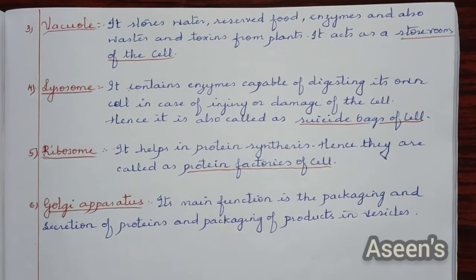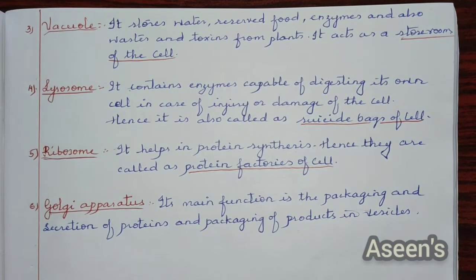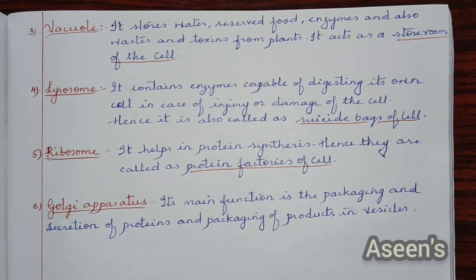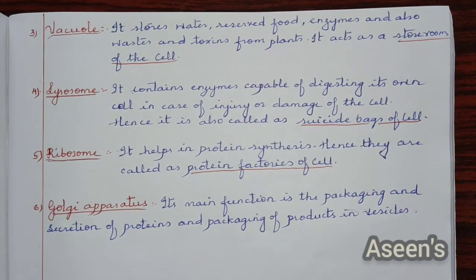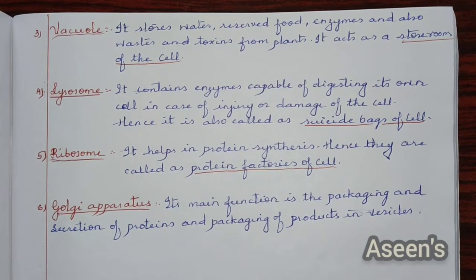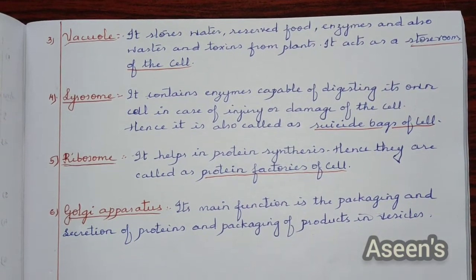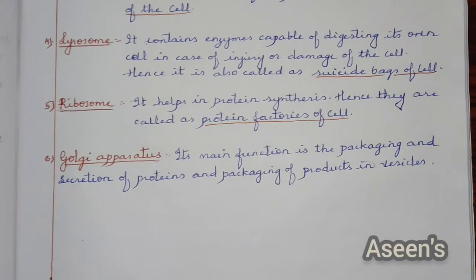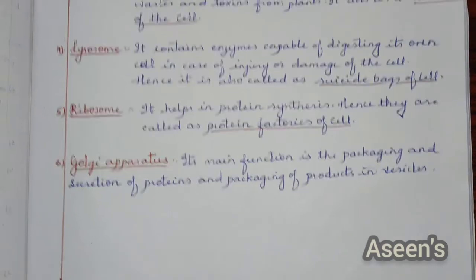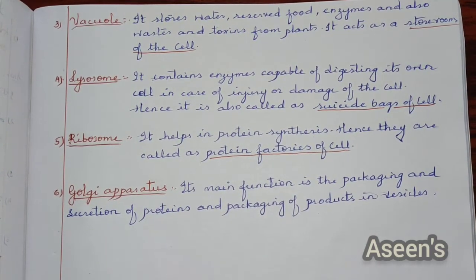Vacuole: it is the store room of the plant cell; it stores water, reserve food, enzymes, waste, and toxins. Lysosomes are the suicide bags of the cell, capable of destroying the cell when it is damaged. Ribosomes help in protein synthesis and hence are called protein factories of the cell. Golgi apparatus is known for packaging and secretion of proteins.